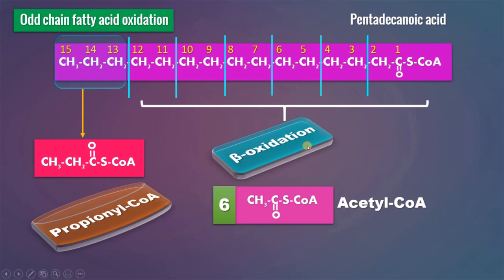We know acetyl-CoA can enter the TCA cycle and generate ATP. So what is the fate of this propionyl-CoA?